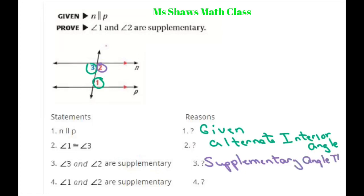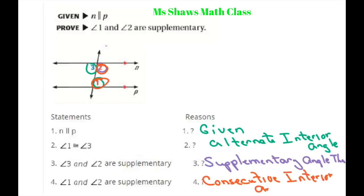I abbreviate theorem as THM. And finally, angles 2 and 1 are supplementary, and that is your Consecutive Interior Angle Theorem. And that's it — thank you, have a nice day!